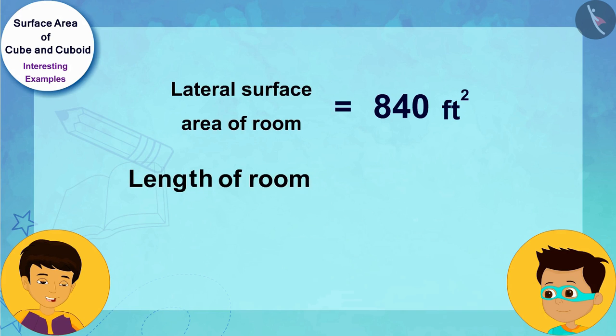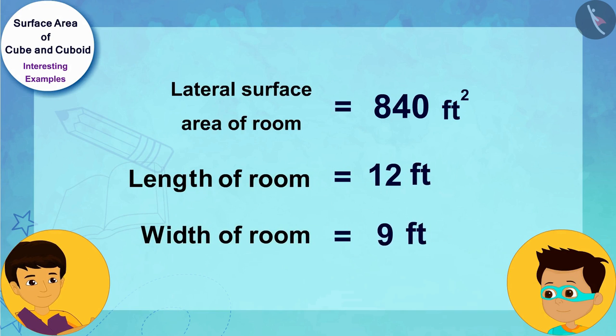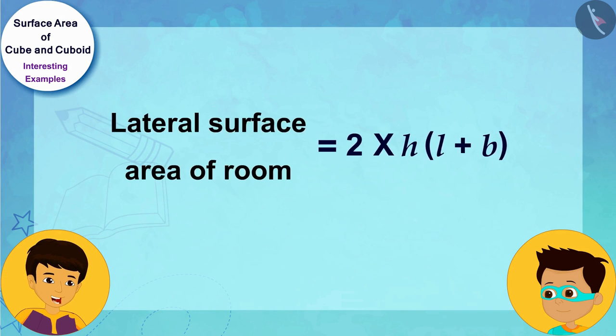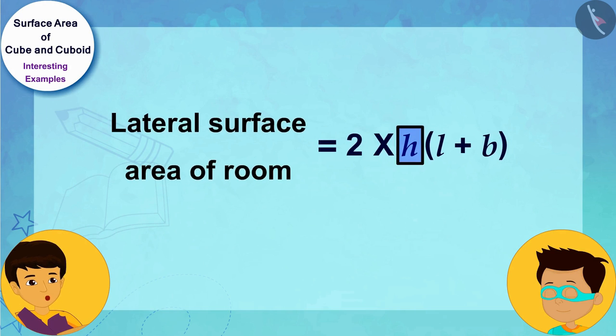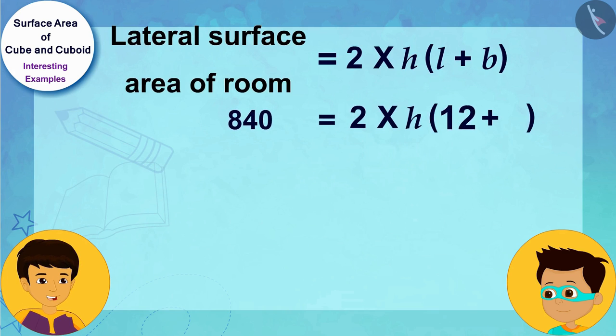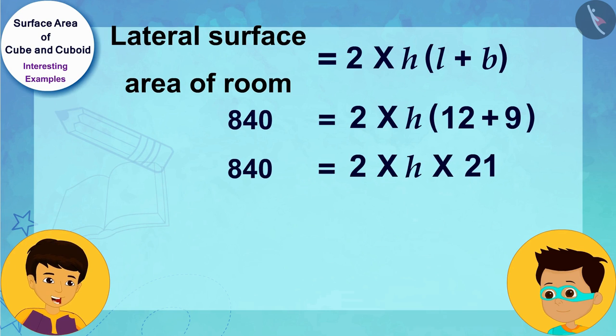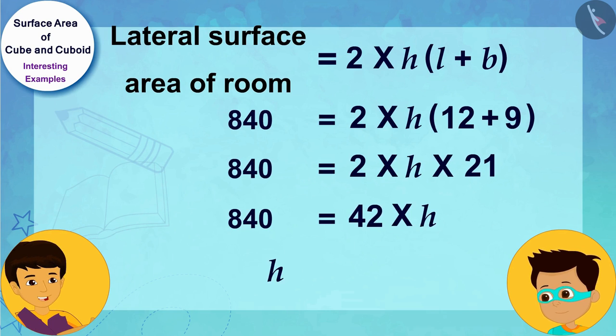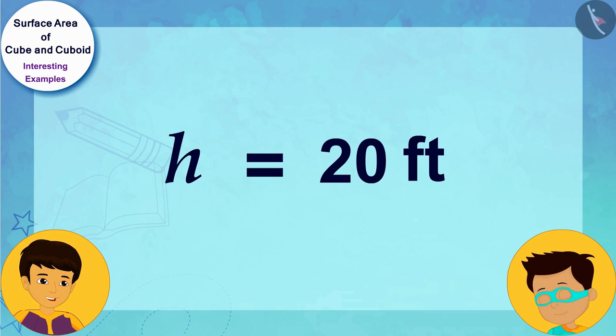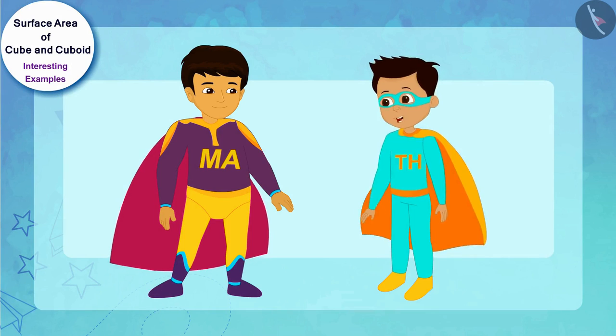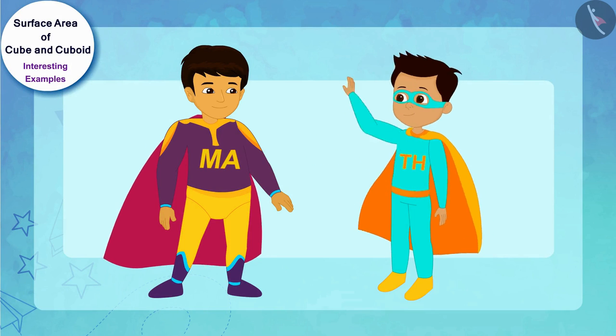Using the formula of the lateral surface area of the cuboid, after solving it, we came to know that the height of the room is 20 feet. Wow, it is really very high!